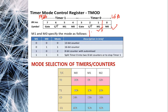The timer or counter operates under Port 3. Using the TMOD register, we select whether to operate in counter mode or timer mode. The TMOD register also includes a gating signal. For Timer 1, the bits include mode selection M0 and M1, timer/counter select, and gate signal.